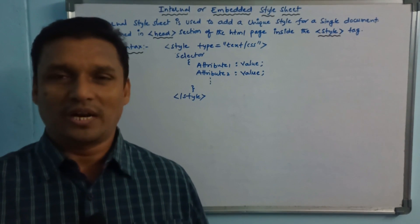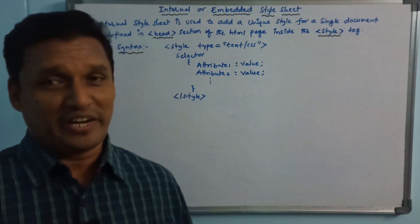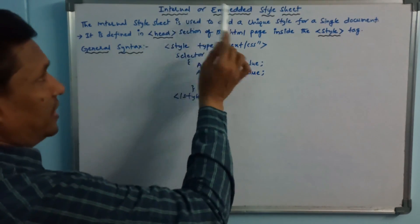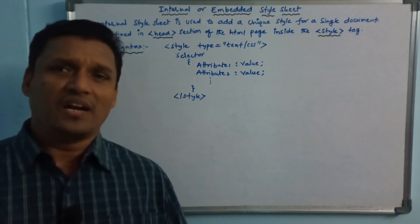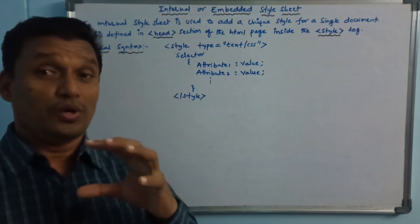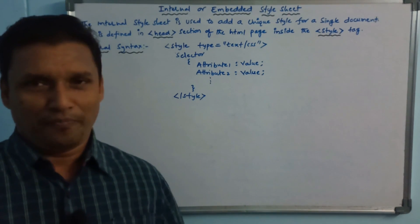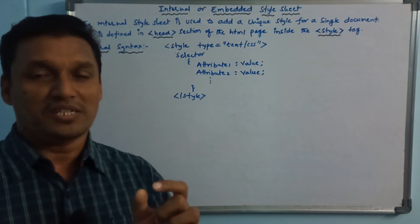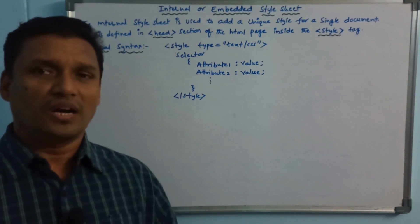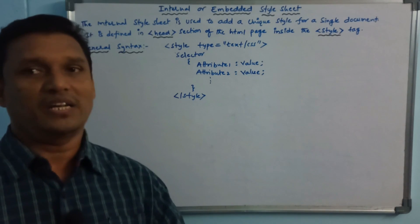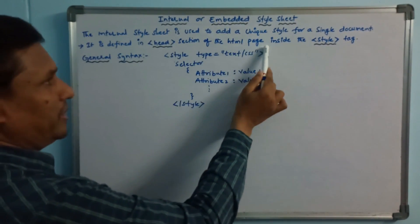The internal style sheet is used to add a unique style for a single HTML document. When a particular tag needs to maintain a unique style throughout a single document, we can use the internal stylesheet. It is defined inside the HTML page within the style tag.